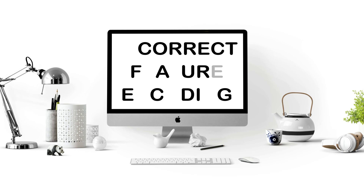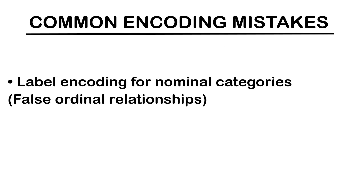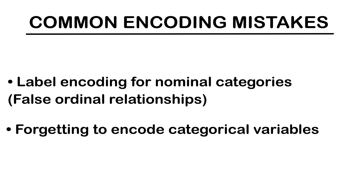Incorrect feature encoding. Feature encoding is critical for handling categorical variables. Common mistakes include using label encoding for nominal categories, creating false ordinal relationships, or forgetting to encode categorical variables altogether. Consider a color feature with the values red, blue, and green.